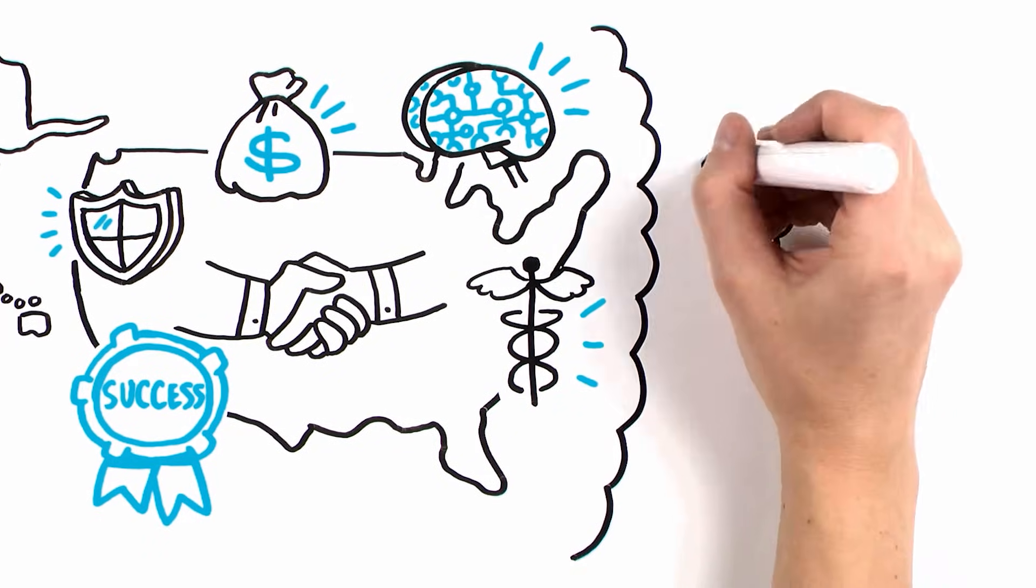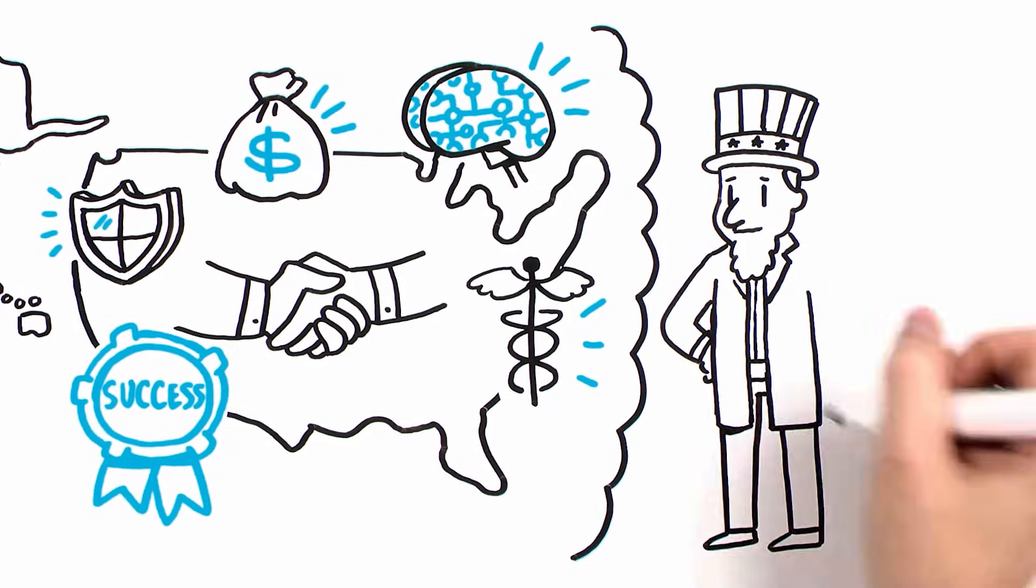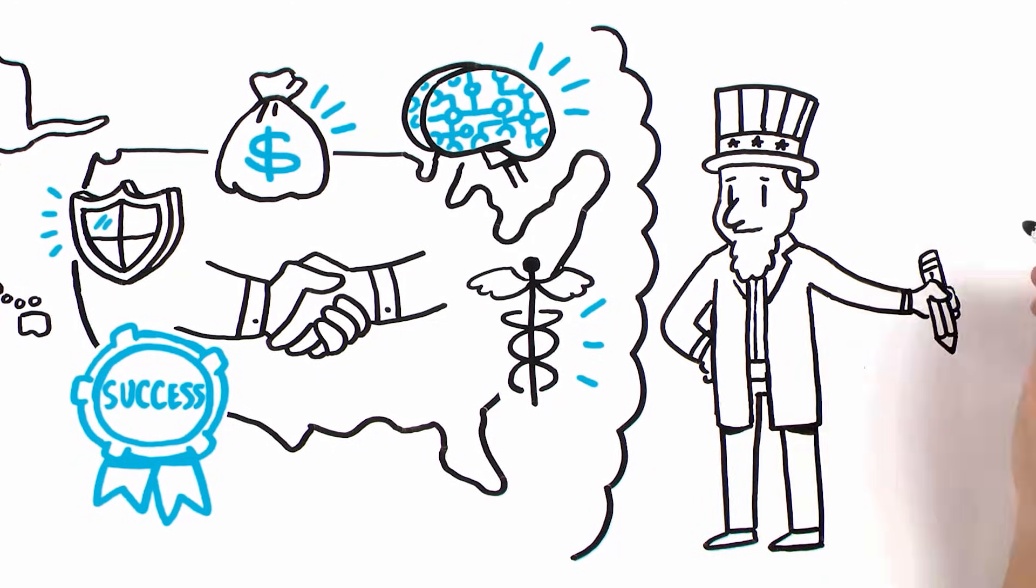Despite the long-standing success of this partnership, some in Washington want to significantly reduce the federal government's role in funding F and A costs.